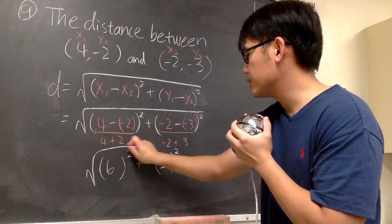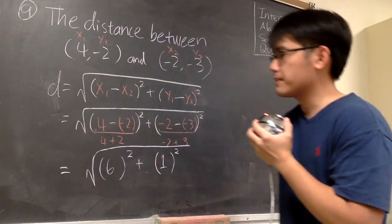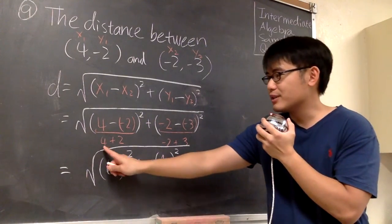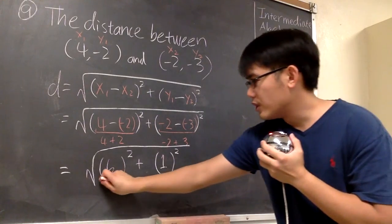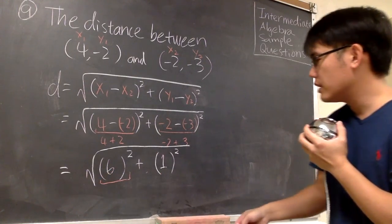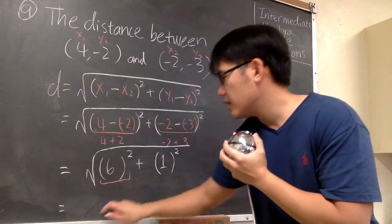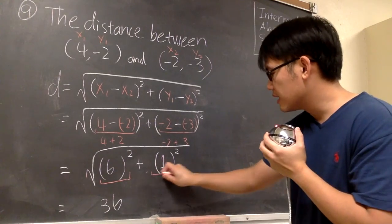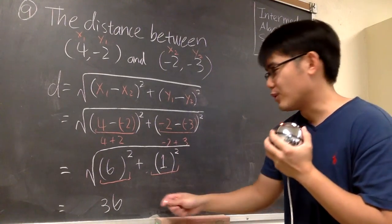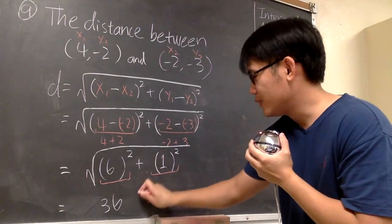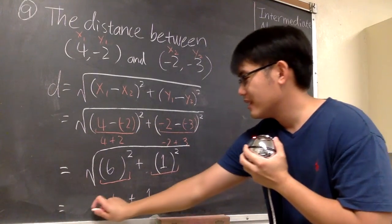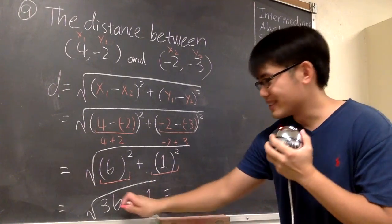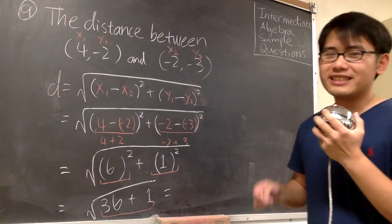We still have the big square root on the outside. Working inside out again — do not cancel the square root and the squares — we have to work out 6 to the second power, which gives us 36. And then 1 to the second power is 1 times 1, which gives us 1. Then we add 36 plus 1, and don't forget we still have the square root. Working inside out: 36 plus 1 gives us 37.